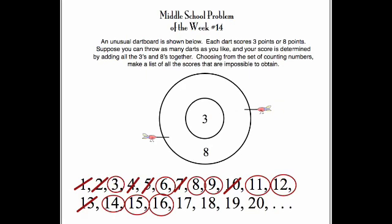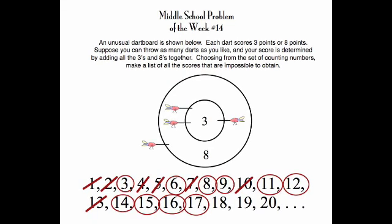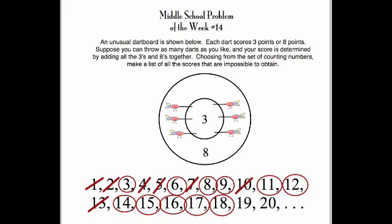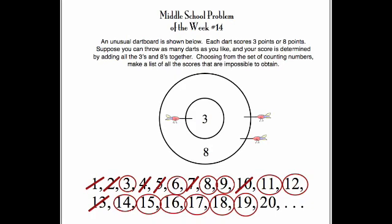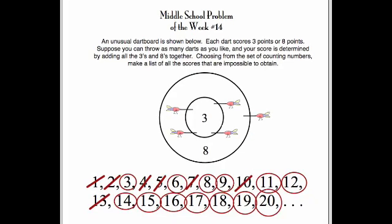And now notice that we've just scored three in a row. So if we simply take our score for fourteen and add a three, we get seventeen. Take our score for fifteen and add three and we get eighteen. Take the two darts that scored sixteen and add three to get nineteen. And I hope you can see that by simply adding three to scores already obtained, we can get a score of any counting number higher than the one shown here.